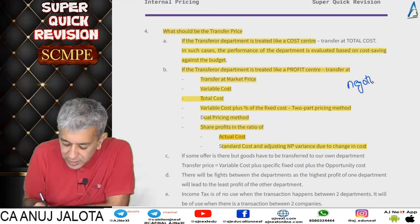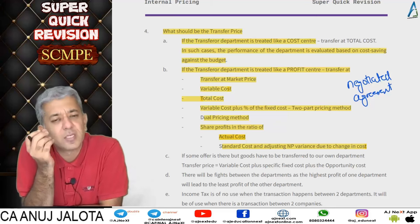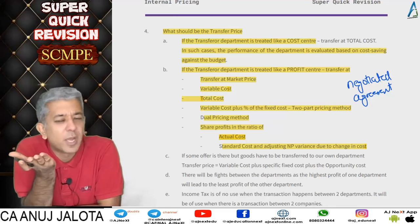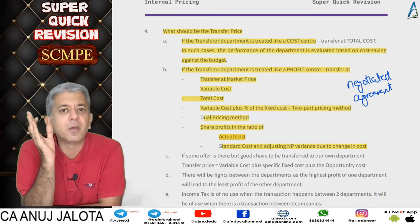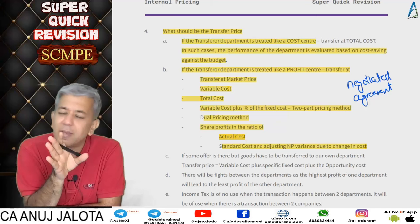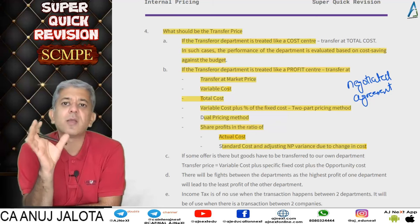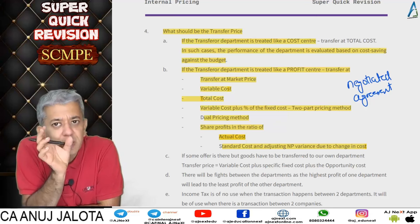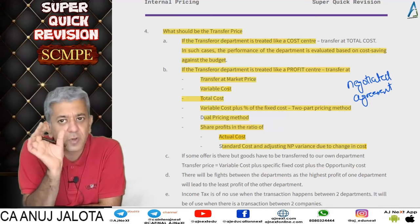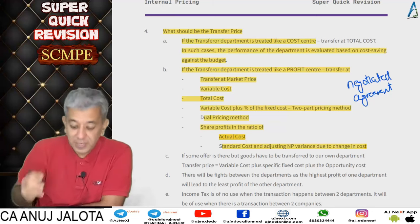There is also the negotiated or agreement method. The first division tells the second: I'll transfer at 10 rupees. The second says 9 rupees. First says okay, take it at 9.5. Second says 9.4 is the most I can afford. First says deal is done. This is the negotiated method. The rule is: you negotiate for a certain period and that transfer price remains fixed for that period.